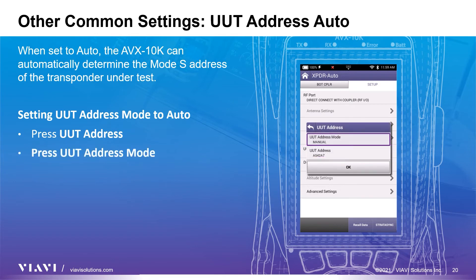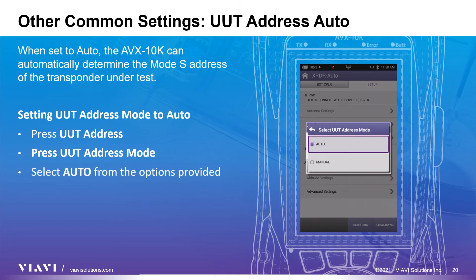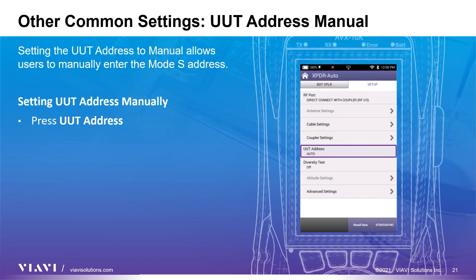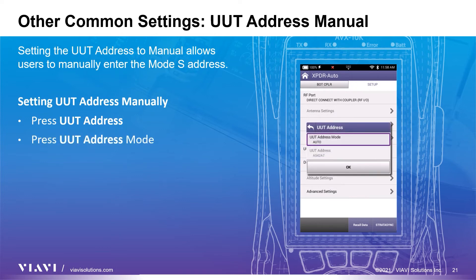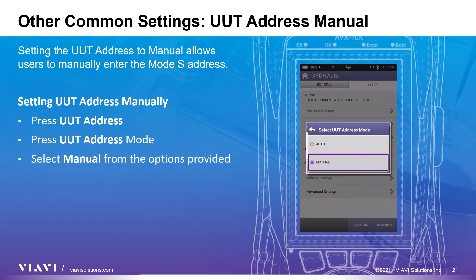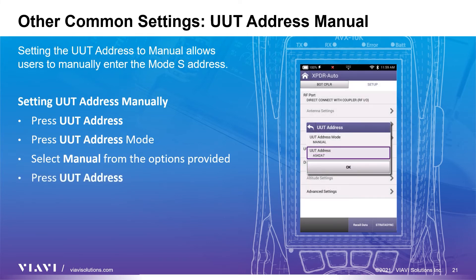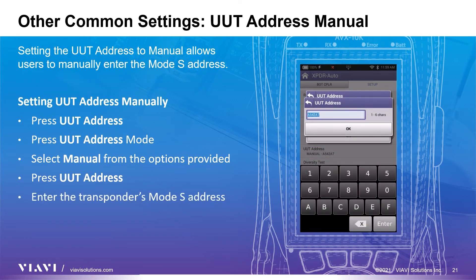To automatically detect the mode S address, select the UUT address button. In the pop-up, click the UUT address mode button and then select auto. When testing with the UUT address in the manual condition — for example, in a high traffic environment or with weight on wheels — the operator must input the mode S address for the UUT to respond. To manually enter the mode S address, select the UUT address option, select manual in the resulting pop-up, then click the UUT address button and enter the address using the on-screen keyboard.